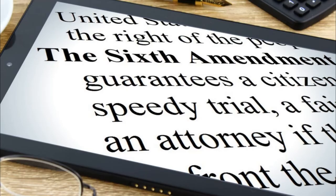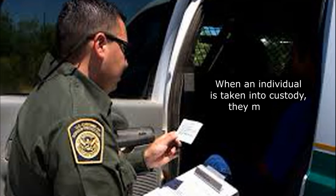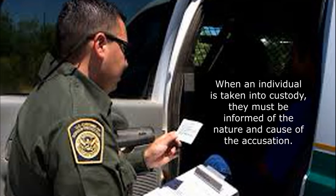Amendment 6: The Sixth Amendment guarantees that citizens have the right to a fair and speedy trial by an impartial jury of the state and district where the crime was committed. When an individual is taken into custody, they must be informed of the nature and cause of the accusation. Today, a person must be read their Miranda rights and told what they are being accused of.